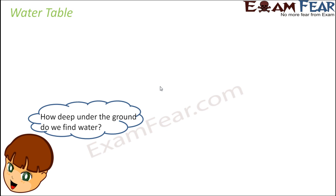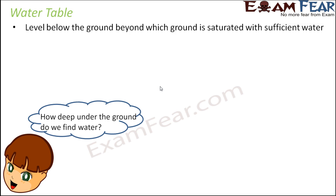When we talk about groundwater, it becomes very important to talk about the water table. The water table decides how deep under the ground we find water. If you start digging the soil, maybe immediately you will not find water — you need to dig quite deep. That's because water exists at a certain depth, not immediately towards the surface. How deep you find water depends on the water table.